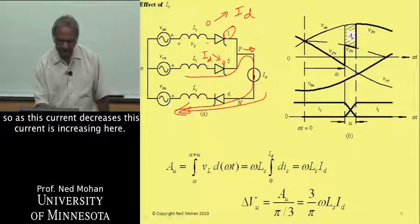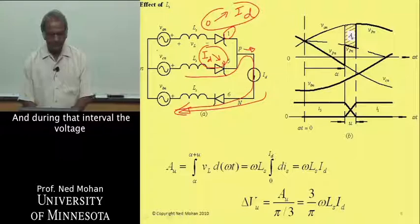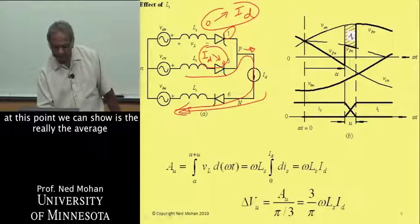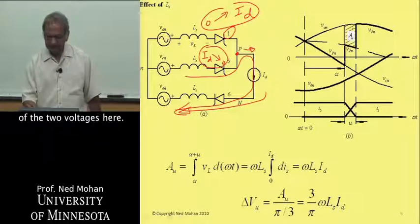The net current here has to remain equal to ID. So as this current decreases, this current is increasing here. And during that interval, the voltage at this point we can show is really the average of the two voltages here.